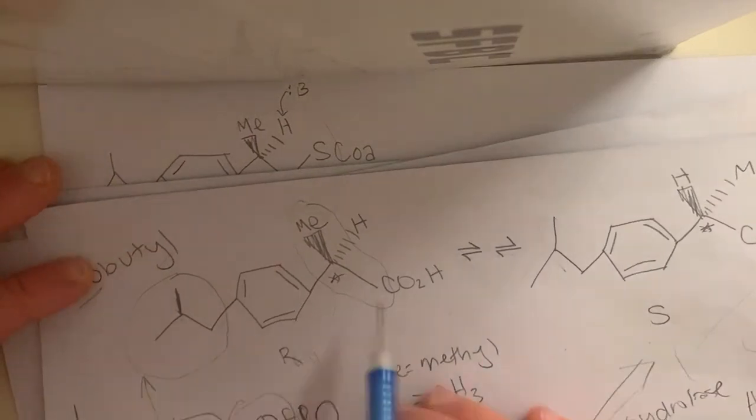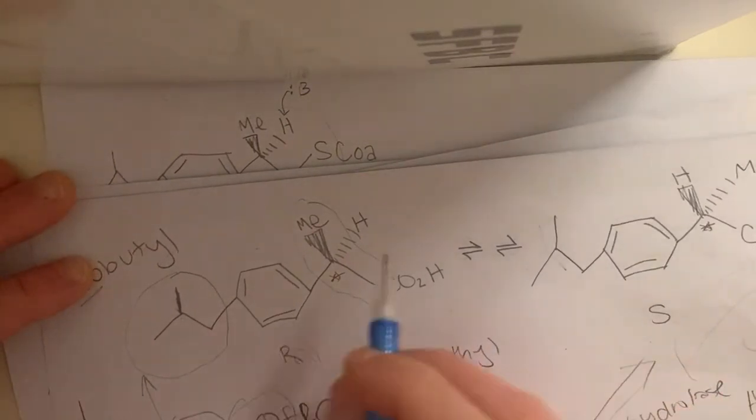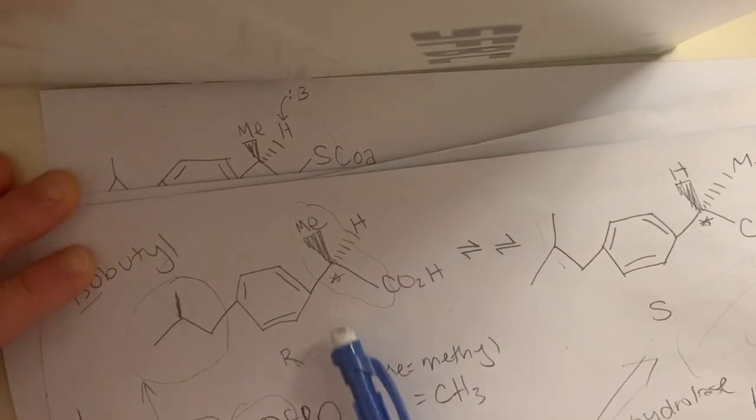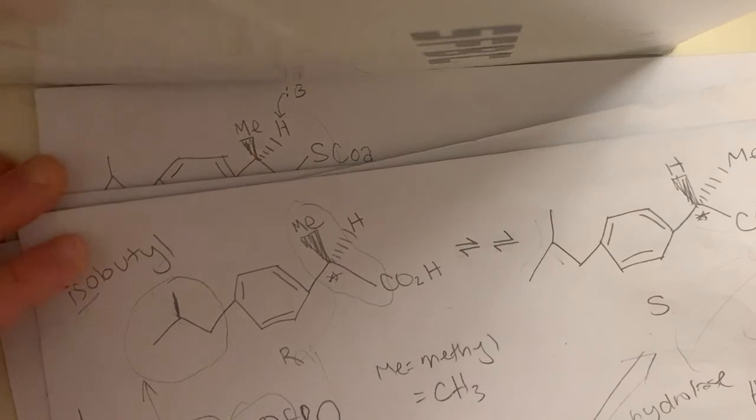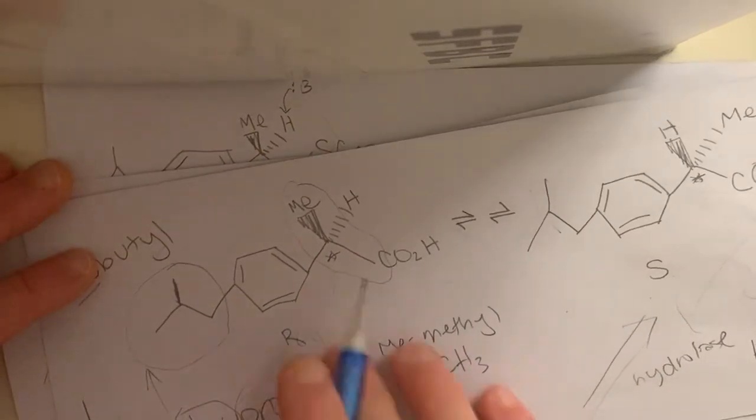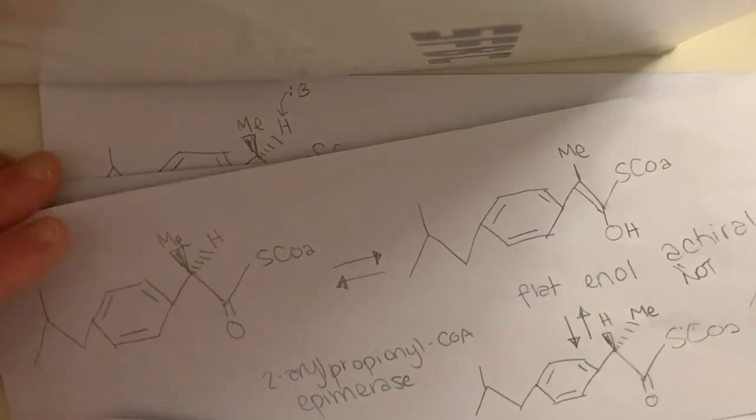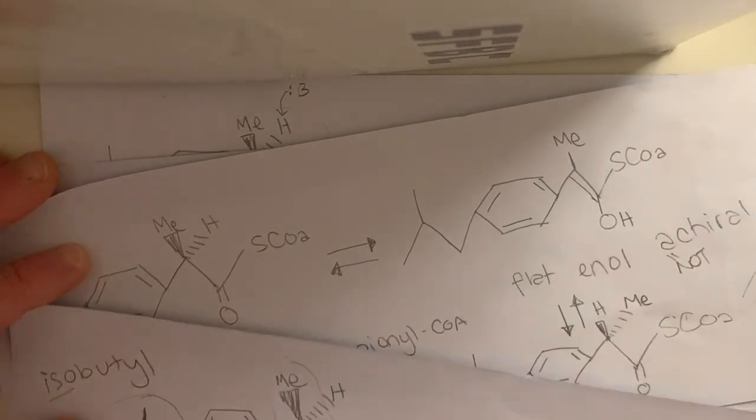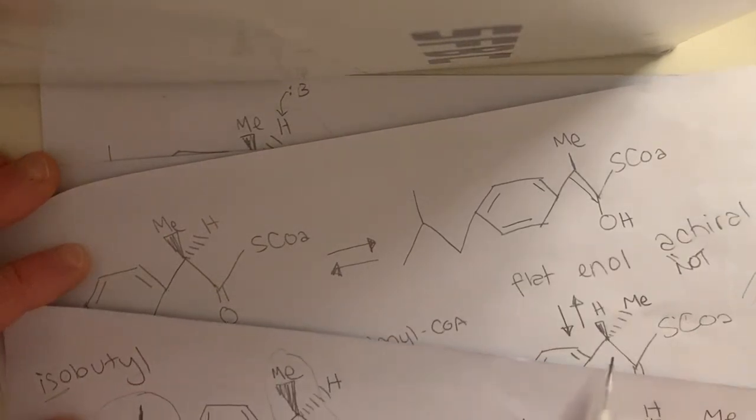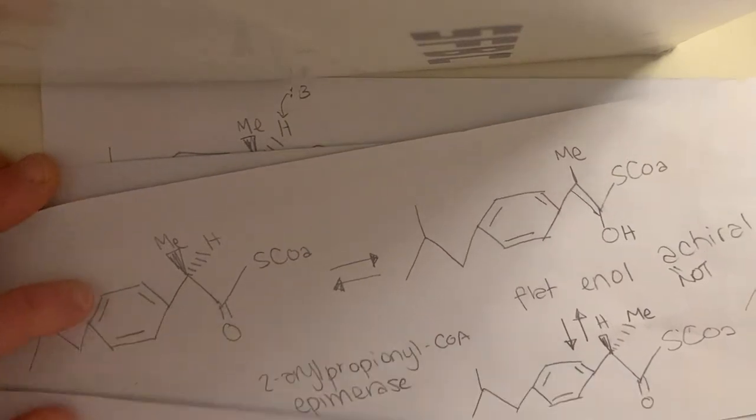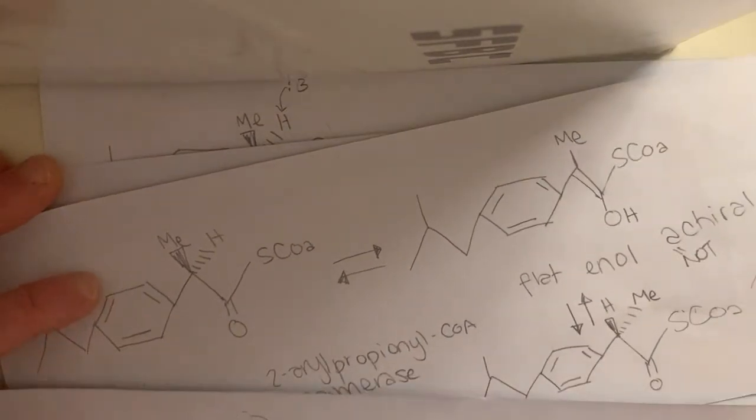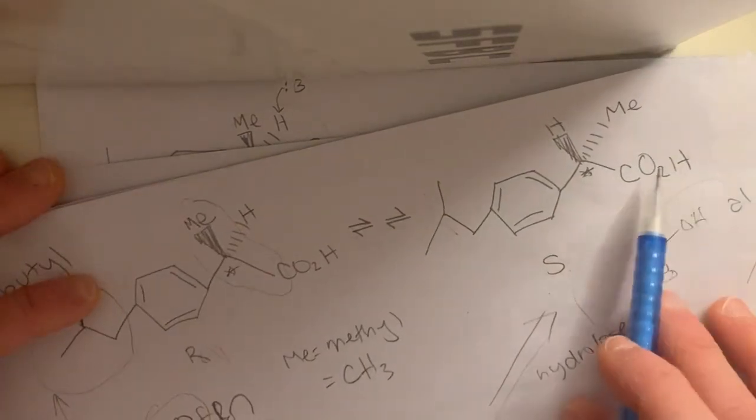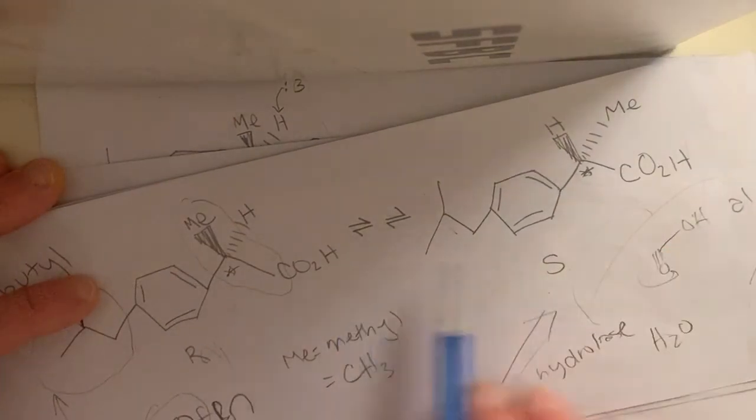And so that's how through this series of steps, you can go from the R form to the CoA form of the R, or then take that to remove the hydrogen, get it into that flat enol form. Then add the hydrogen back in a way that gives you the S form, but still with the CoA. And then remove that with the hydrolase to get you back to the S form.